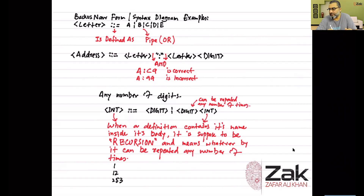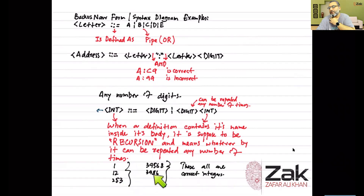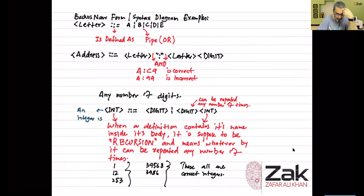An integer can be 1, 12, 253, 395, or any number of digits — all represented with one single BNF line. Values like 1, 12, 253, 3956, 8398 can all be represented using this one syntax. It is flexible in terms of the number of elements appearing. An integer is defined as a digit, or any number of digits.